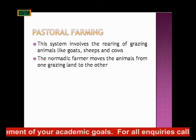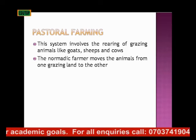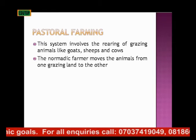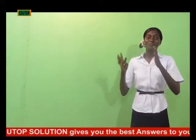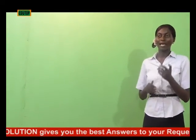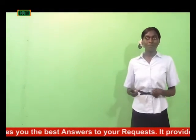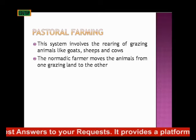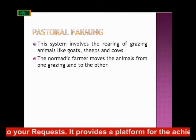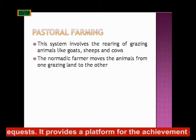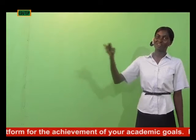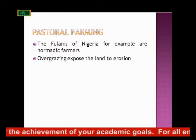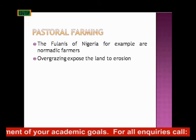Then there is pastoral farming. Pastoral farming involves the rearing of grazing animals like goats, sheep, and cows. The nomadic farmer — like the Fulanis we have in Nigeria — moves their animals from one grazing land to another. They allow the animals to feed on green grass, moving towards where they find green pasture for their livestock.